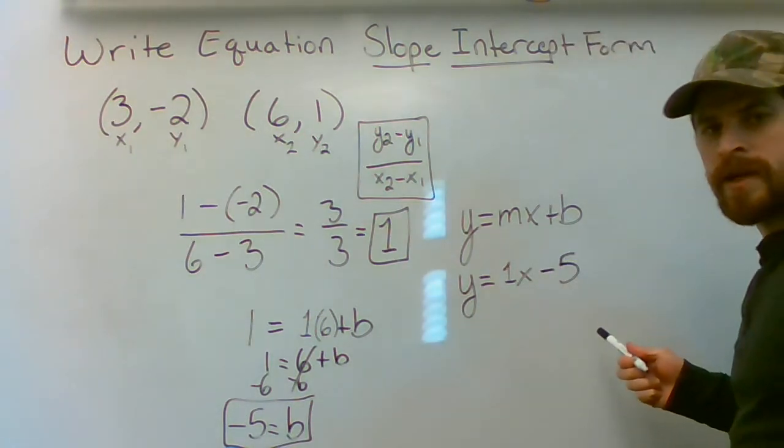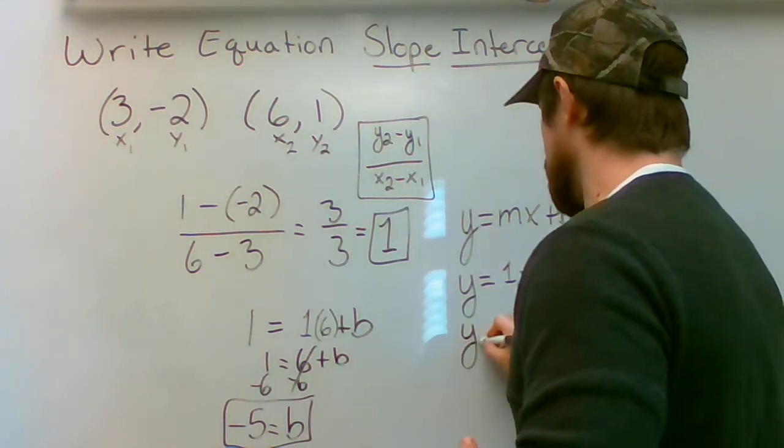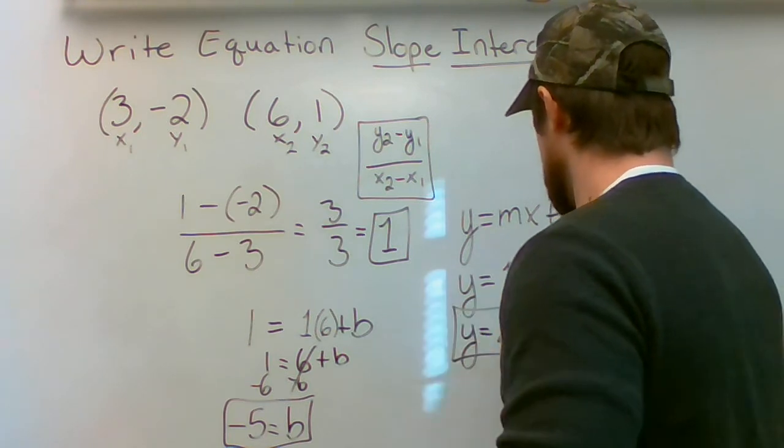This is your equation in slope intercept form. I typically wouldn't put the 1 there. So if I was going to simplify everything I would make it look like that.